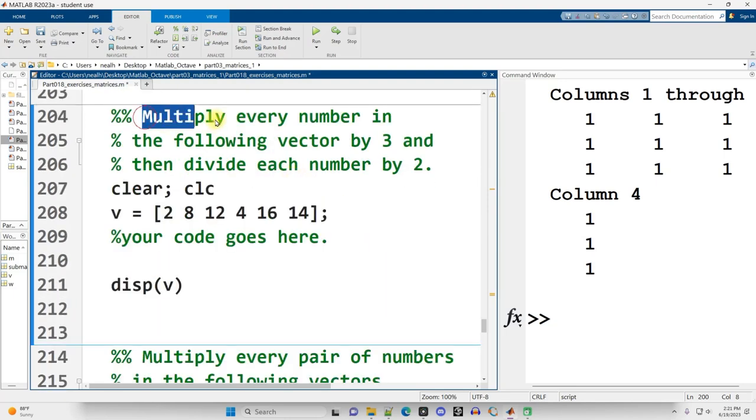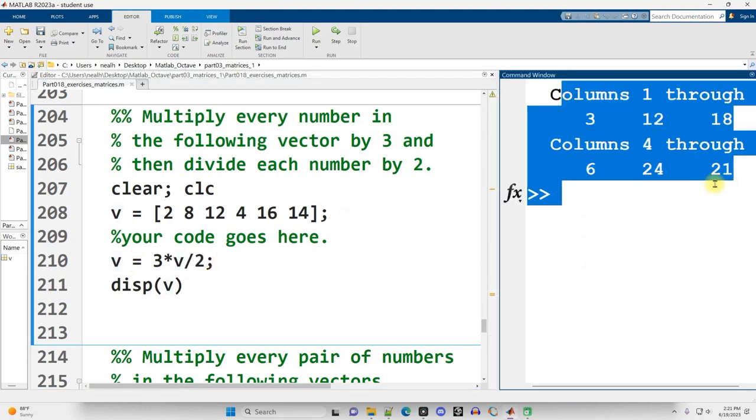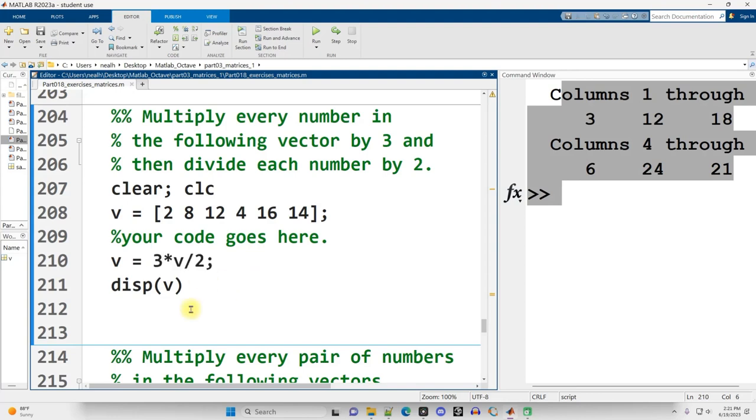Multiply every number in the following vector by 3 and then divide each number by 2. So this is v equals. And the v equals is important. We want to replace the original values with this new calculated result. 3 times v divided by 2. Great. And there's my results right there. Now, just to be safe, I think it's a good idea to get in the habit of putting dot star and dot slash. Now, these are scalar values. They are single values rather than vectors. So we don't really need the dot operators. But I think it's a wise idea so that we don't make mistakes later on. Also, it might be a good idea to put in parentheses. I mean, the question really emphasizes that we want to do the multiply by 3 first. And this will emphasize that that is the case. Even though order of operations did it correctly the first time as well, the way we wrote it.